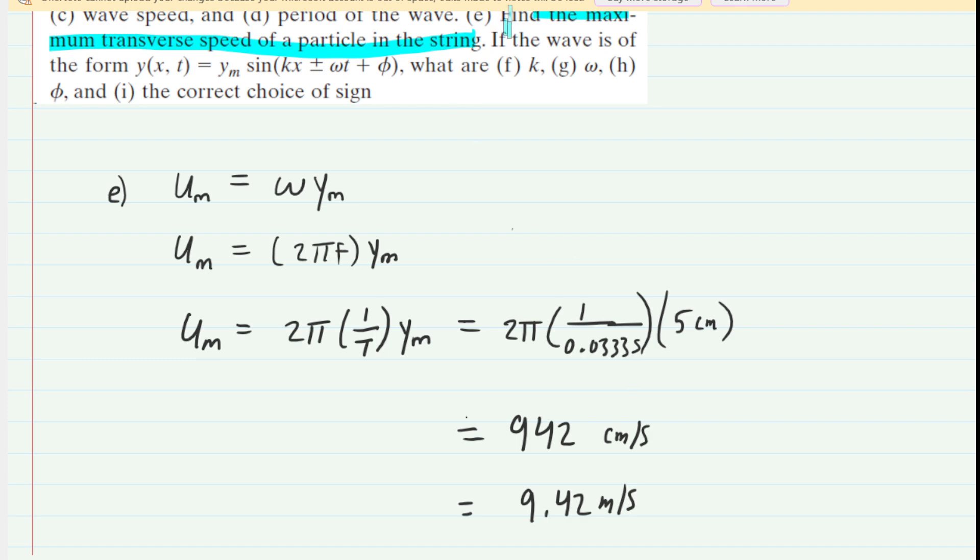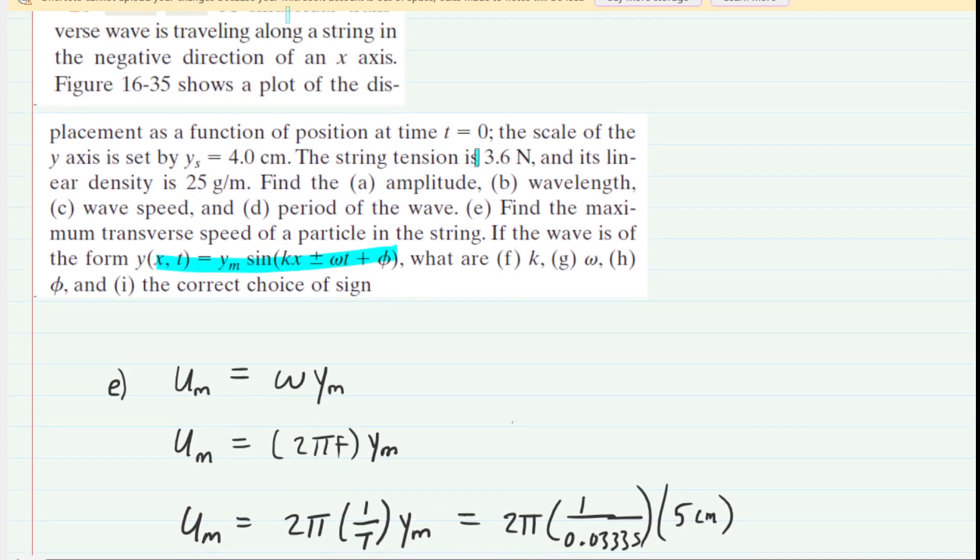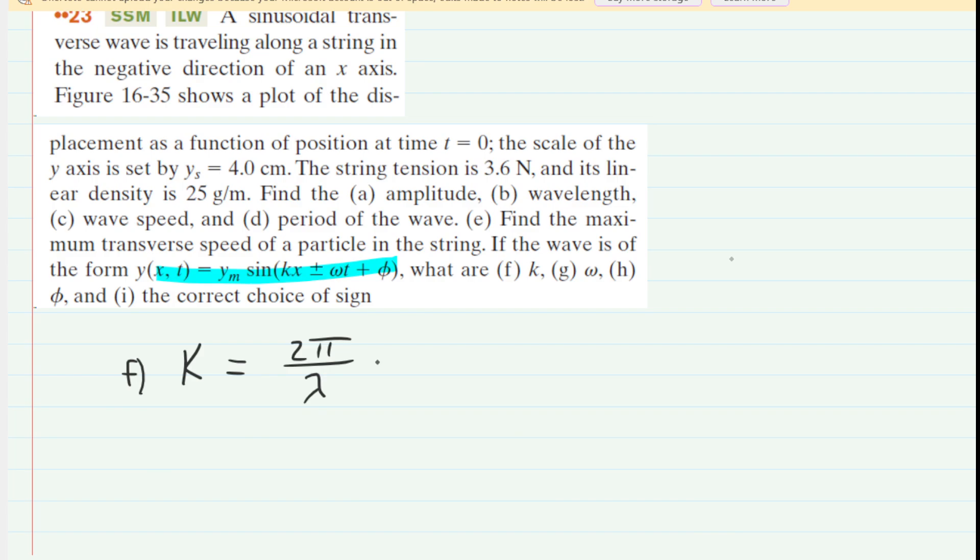So moving on, it says if the wave is of the form given by this equation, we need to find next the value of k, which is the so-called angular wave number. So let's do that next. And we can do that by dividing 2 pi radians by the wavelength. We know the wavelength was 40 centimeters. But if we divide that by 100, we get 0.4 meters. So then computing that, we get about 15.7. And that's going to be in radians per meter. That is the correct answer to part F.